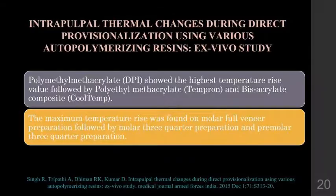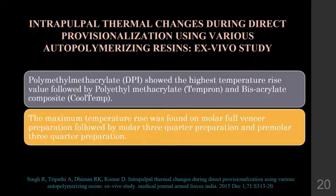Regarding intrapulpal thermal changes during direct provisionalization using various auto-polymerizing resins: polymethyl methacrylate showed the highest temperature rise, followed by polyethyl methacrylate, and then bisacrylate composites. The maximum temperature rise was found in molar full-veneer preparation, followed by molar three-quarter preparation, and premolar preparation.